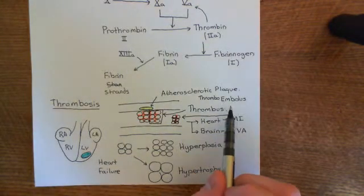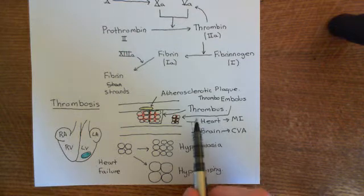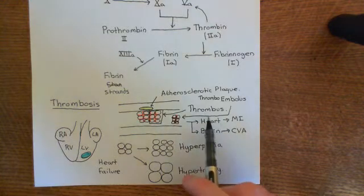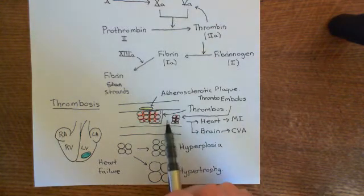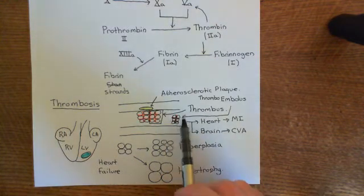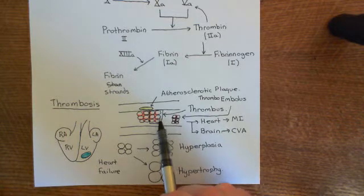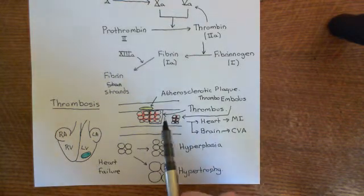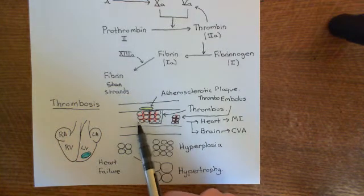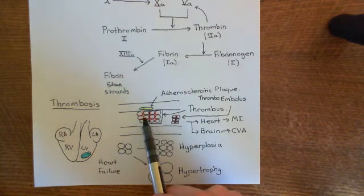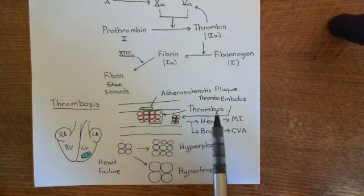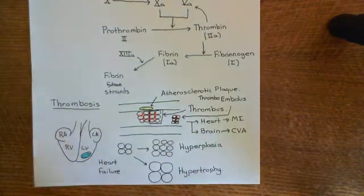A thromboembolus is an embolus — a particle moving around the bloodstream — that is made up of a portion of a thrombus. This means that these large particles can be moved to other sites within the body. You might have a thrombus forming in an artery within the leg and it could end up being moved somewhere completely different.